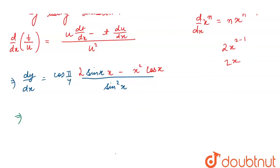which is dy/dx equals to, that is differentiation of our question with respect to x: cos(π/4) in brackets, [2x sin(x) minus x² cos(x)] upon sin²(x). So this is our required solution. Thank you.